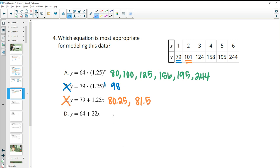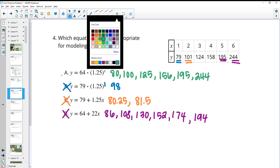And then D will do a similar thing. So 64 plus 22 times 1 would give us 86, which is pretty far off from that. But if we plug in a couple more, we get 108. We get 130. All of these are kind of close. 152. Then we get to 174, which is pretty far off from that. And then 194, which is significantly further off of that. So our best bet in this case is option A.